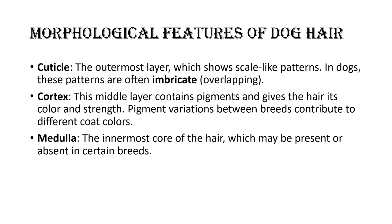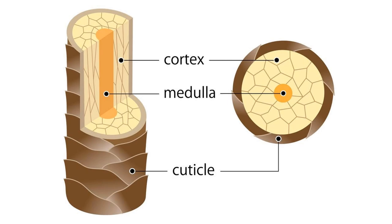The morphological features of dog hair are the same as the human hair pattern. We look at three things: the cuticle, cortex, and medulla. The cuticle is the outermost layer and its patterns are mostly imbricate — overlapping, scale-like patterns. The cortex is the middle layer which contains pigments and gives color and strength to the dog hair. The innermost core is called the medulla, which can be present or absent in certain breeds.